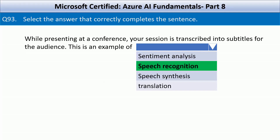Sentiment analysis analyzes emotional tone in text. Speech synthesis converts text to speech — for example, a screen reader reading aloud — which is the reverse of what's happening here. Translation converts text from one language to another, which might be relevant if subtitles are in a different language, but that is not stated here.